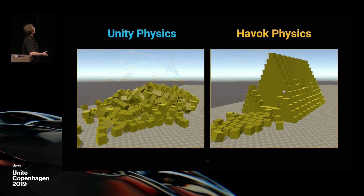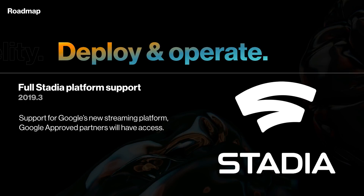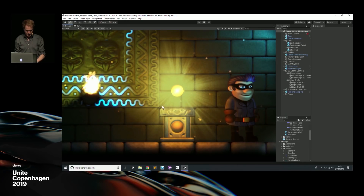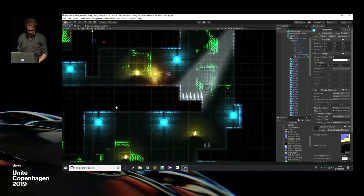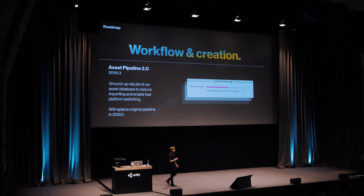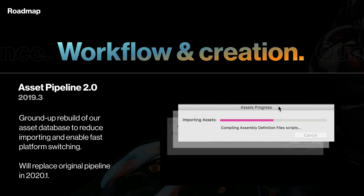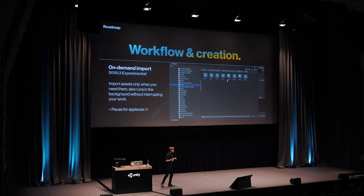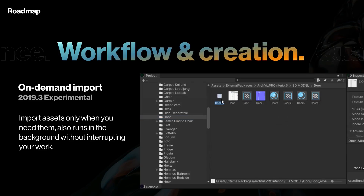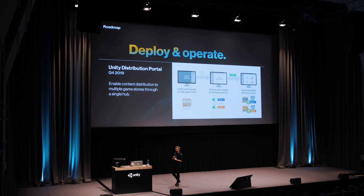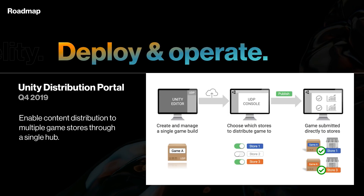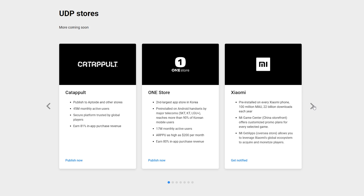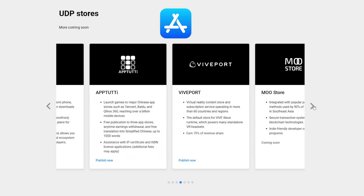Unity support for Stadia is now production ready, including features like DOTS and HDRP. In terms of 2D, a lot of packages are now coming out of preview, and tilemaps now also support 2D lights. As of 2019.3, the new asset import pipeline is the default for new projects. It aims to save time with faster platform switching and lays the foundation for faster imports. Unity is also making the asset pipeline scale better for very large projects. The Unity distribution portal is now in beta. This enables you to distribute your game to multiple app stores through a single hub. Currently, they're still lacking support for a lot of large game stores like the Apple Store and Google Play, but it looks like more are planned to come.